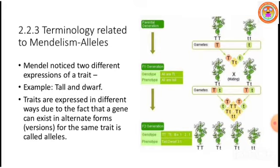A Mendelian trait has two different expressions. Keep in mind that 'trait' means character. Example: tall and dwarf. Tall and dwarf are the two alternative forms of plant height, or stem height. Traits are expressed in different ways due to the fact that a gene can exist in two alternative forms or versions for the same trait — hence they are called alleles.